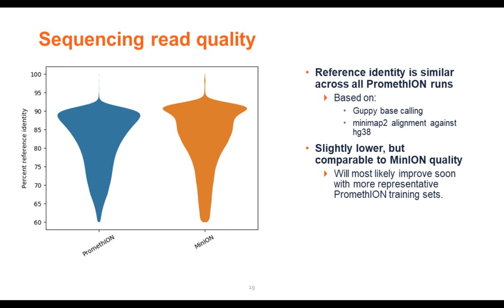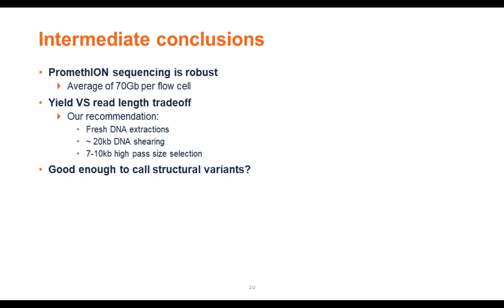For quality, we show the percentage reference identity — the similarity of sequencing reads against the reference genome after base calling and alignment. We get rather comparable qualities to Minion, though slightly lower, likely because base calling for Promethion is not yet as optimized as for Minion, and we expect these qualities will be equivalent in the near future. Our intermediate conclusion: Promethion is very robust, averaging 70 gigabases per flow cell. Best practices are to use fresh DNA, shear to approximately 20 KB, and use size selection for fragments above 7–10 KB.